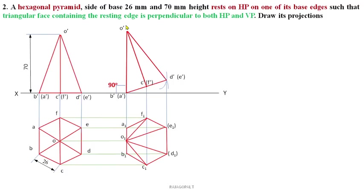This is a straightforward question. Always remember: why is the axis inclination not given? Read the question — the triangular face containing the resting edge must be perpendicular to both HP and VP. The resting edge is AB or ED. Taking AB, the triangular face is OAB. In the final answer, O'A'B' in the front view is perpendicular to XY, and OAB in the top view is also perpendicular to XY — both conditions satisfied. If you have any queries, please ask in the comment box.